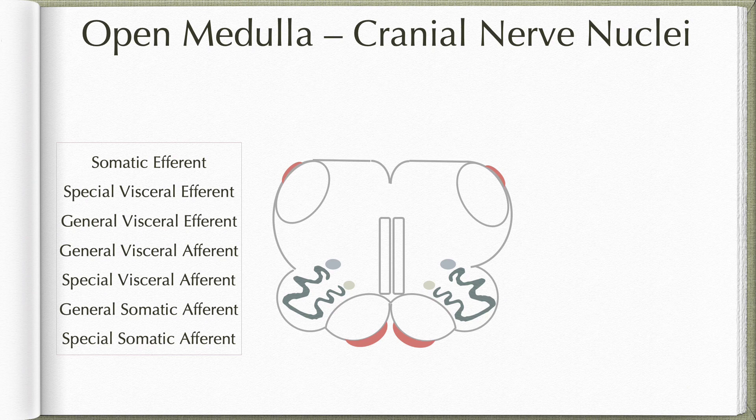Now let us look into the cranial nerve nuclei which are present at this level. In our video on the functional columns, I had mentioned about seven functional columns present in the brainstem. They are arranged from medial to lateral side in the open medulla because of the expanded roof plate. This is one place where we see the cranial nerve nuclei belonging to all the seven functional columns.